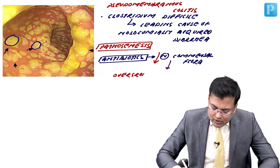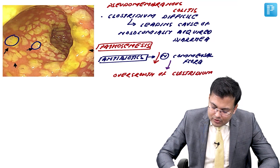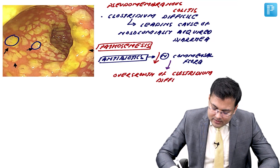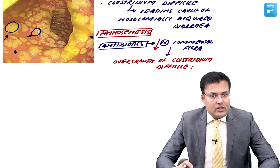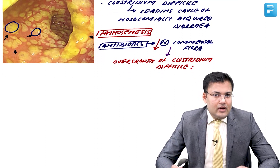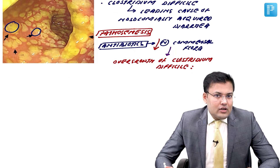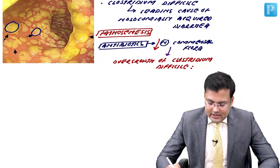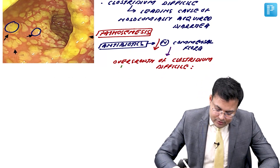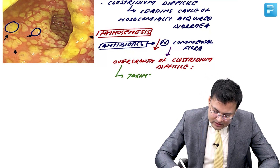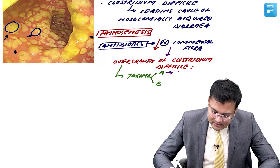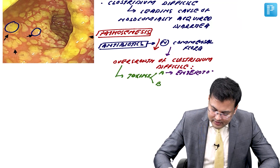This overgrowth of Clostridium difficile produces two toxins: Toxin A, which acts as an enterotoxin, and Toxin B, which acts as a cytotoxin.